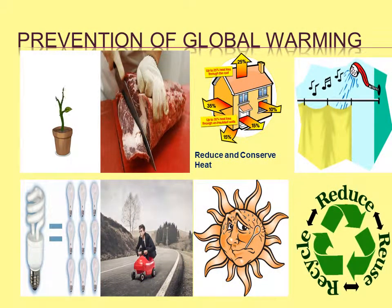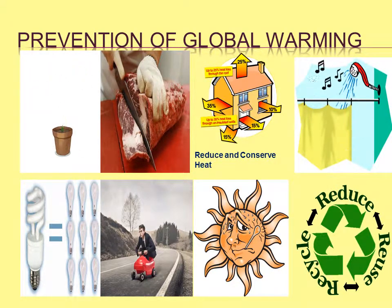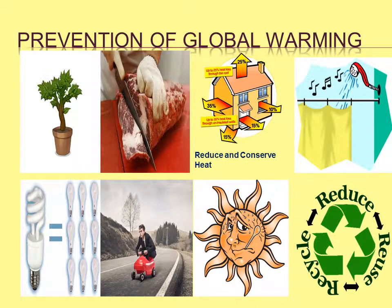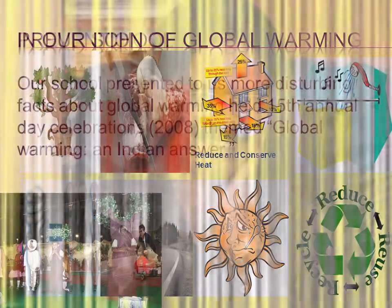To reduce global warming: plant a tree, eat less meat, reduce and conserve energy, use less hot water, change your light bulbs, reduce your driving, use less air conditioning and heat, reduce, reuse, and recycle. In 2008, an annual day presentation was based on global warming. Art Simonson changed all tungsten bulbs to fluorescent bulbs to save electricity and reduce temperature. He also presented a paper on global warming.